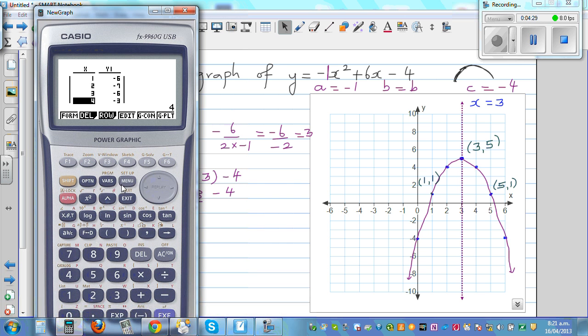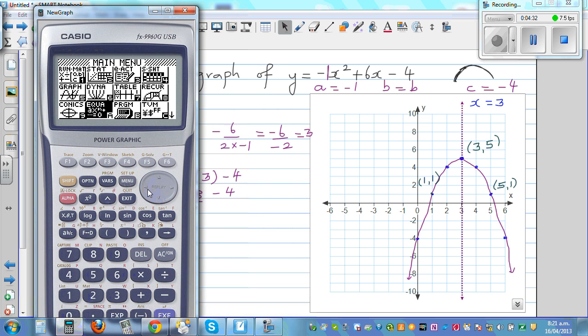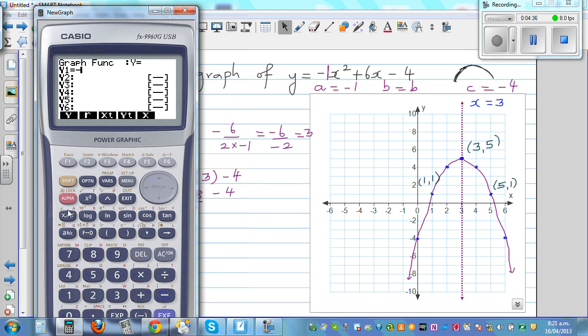Go to graph and type in the equation: minus x squared plus 6x minus 4, and then graph it. First, this is called the maximum, 3 comma 5. Then you can find when x is 5, y is 1, and when x is 1, y is also 1.